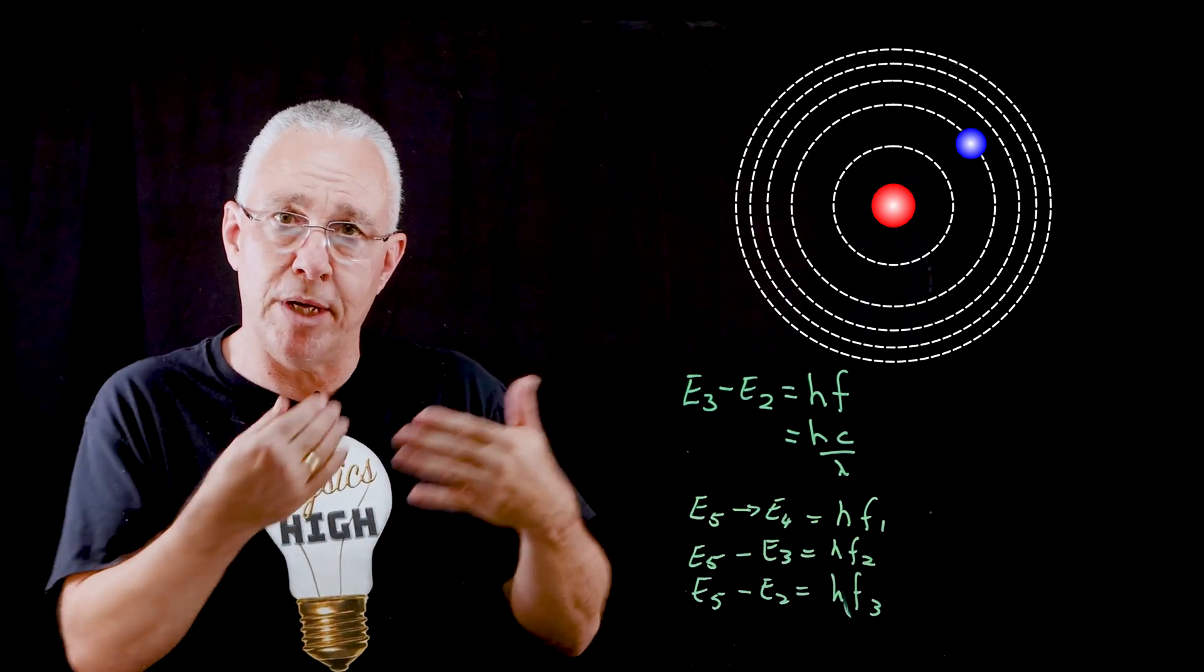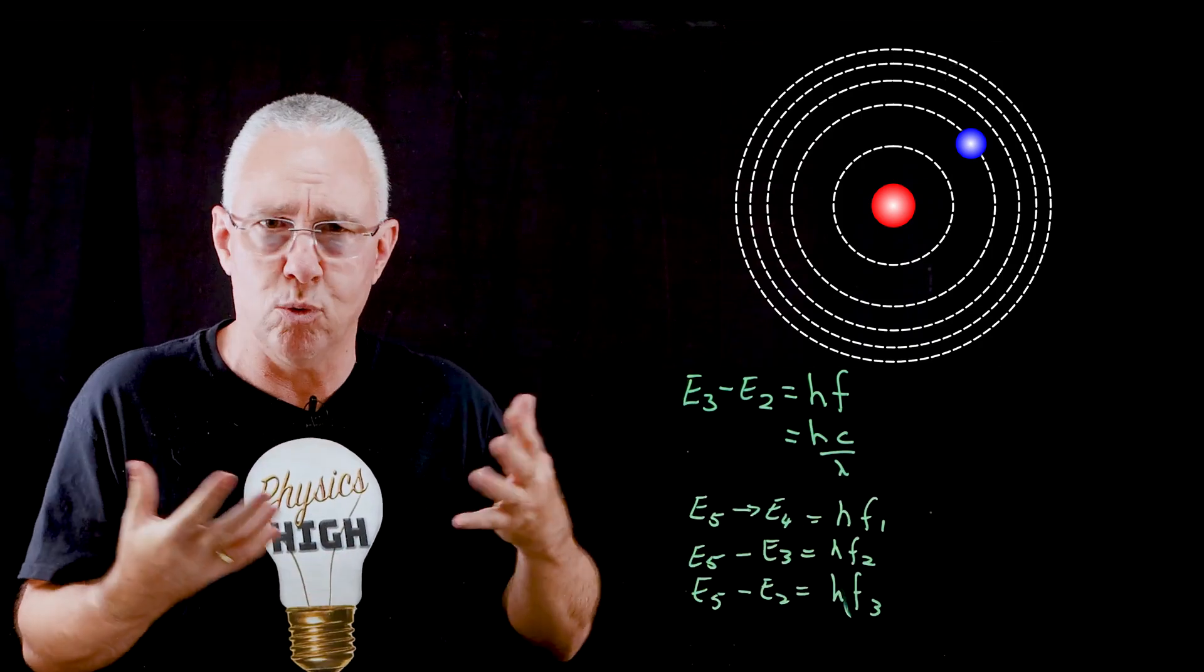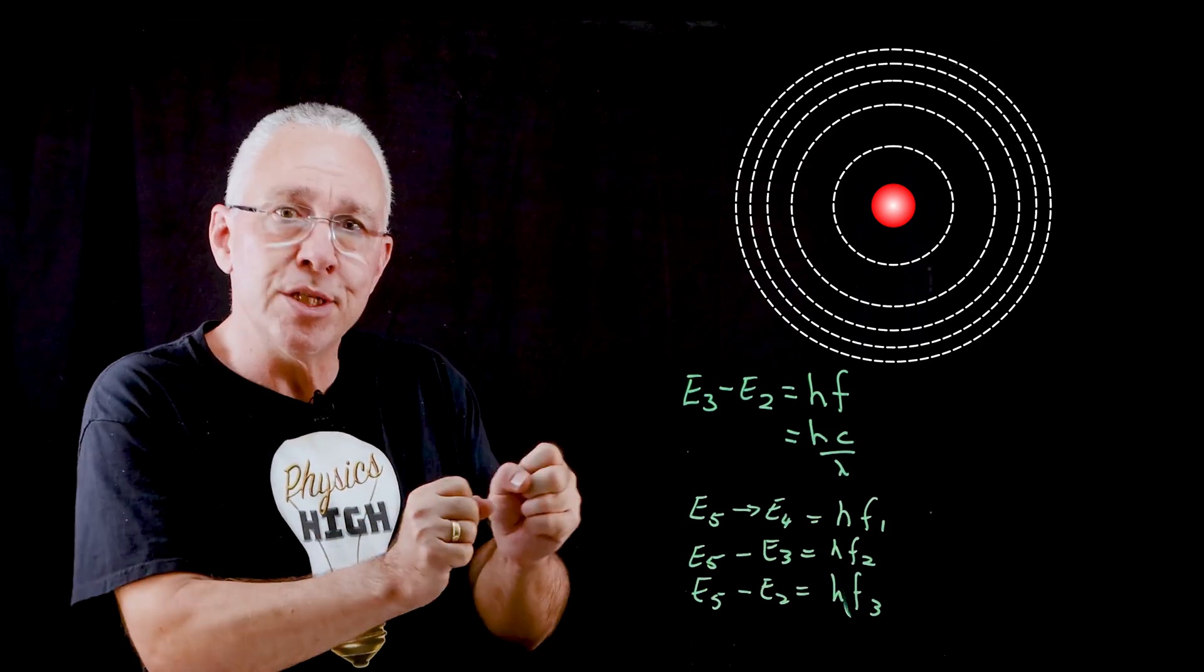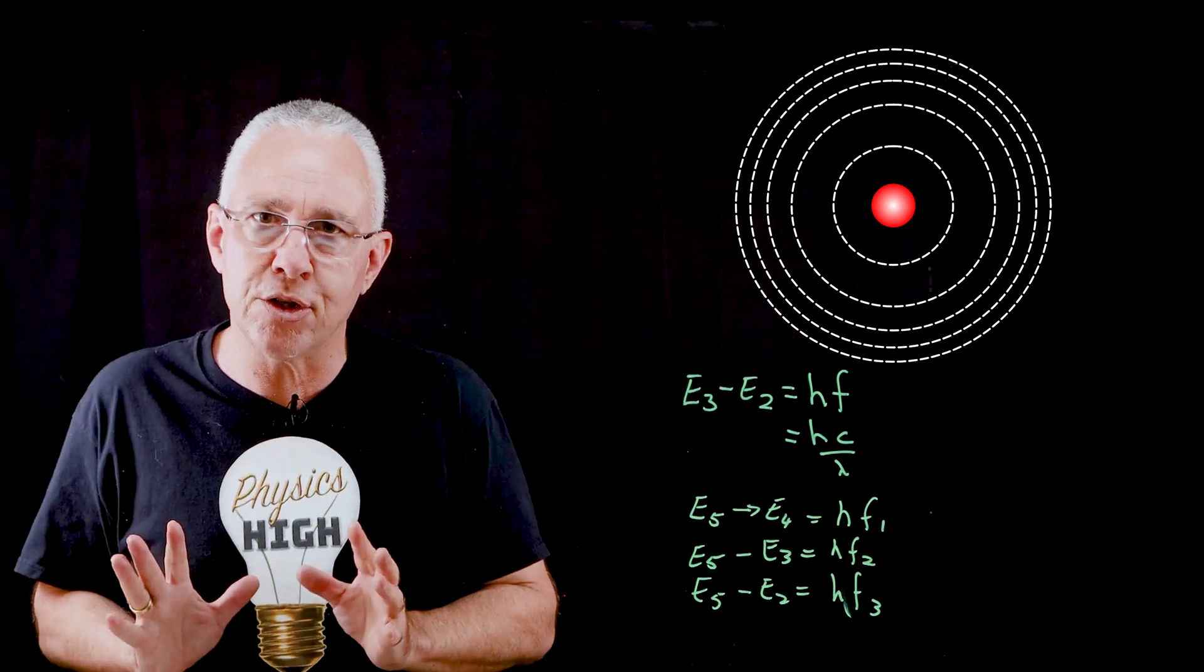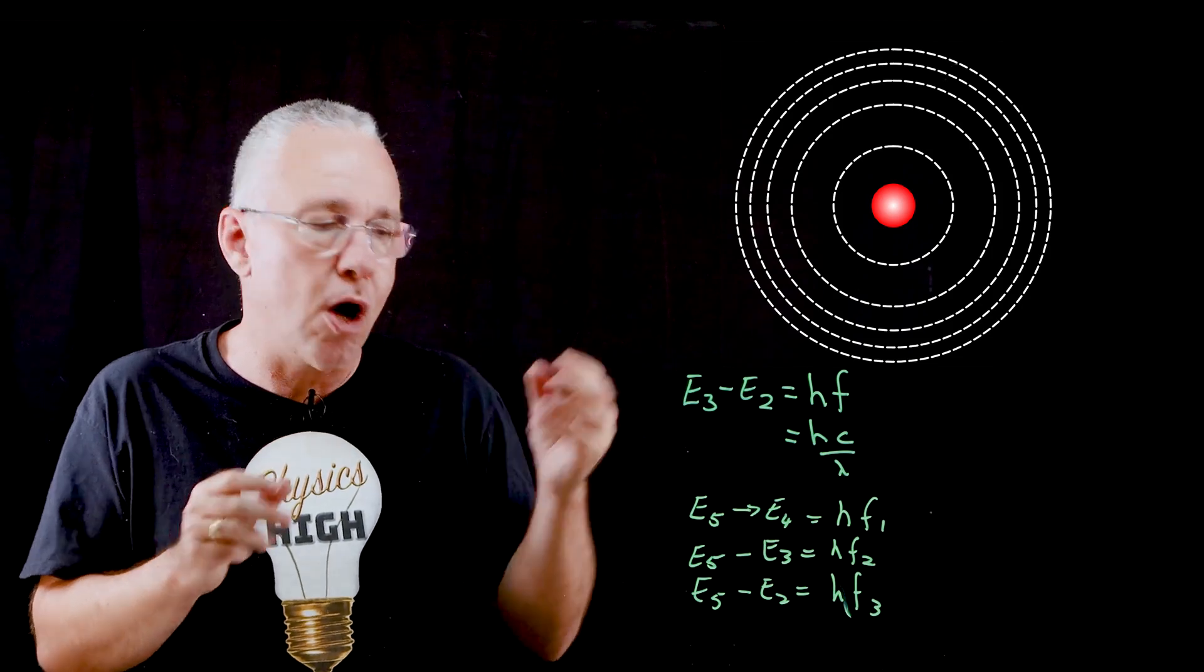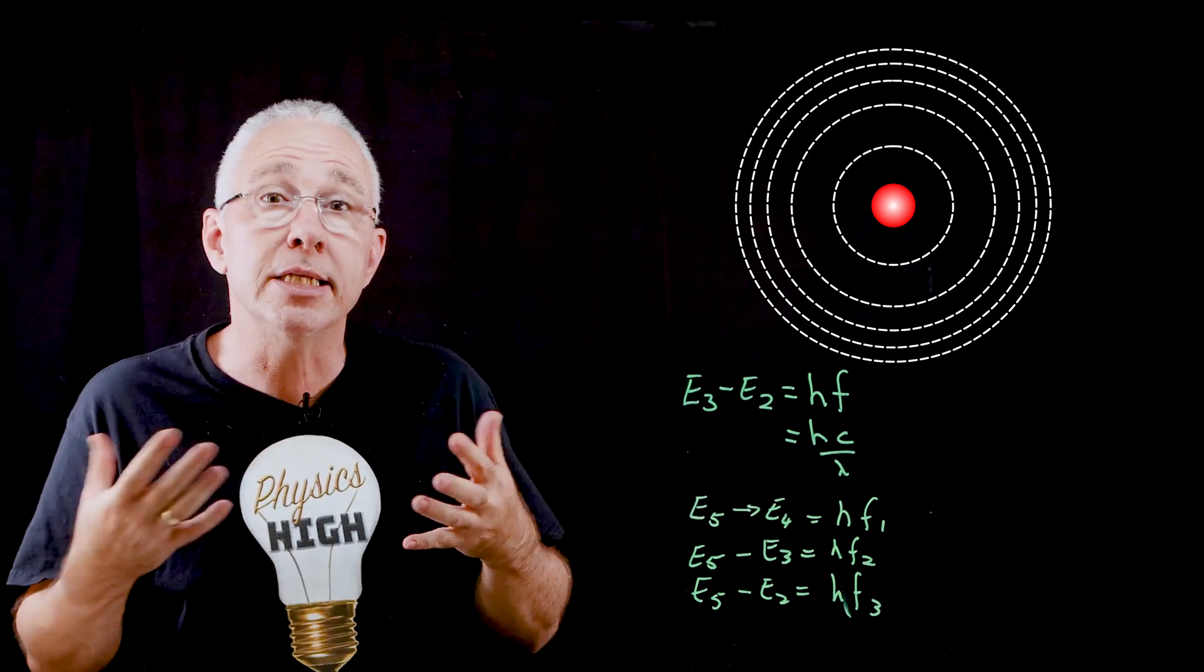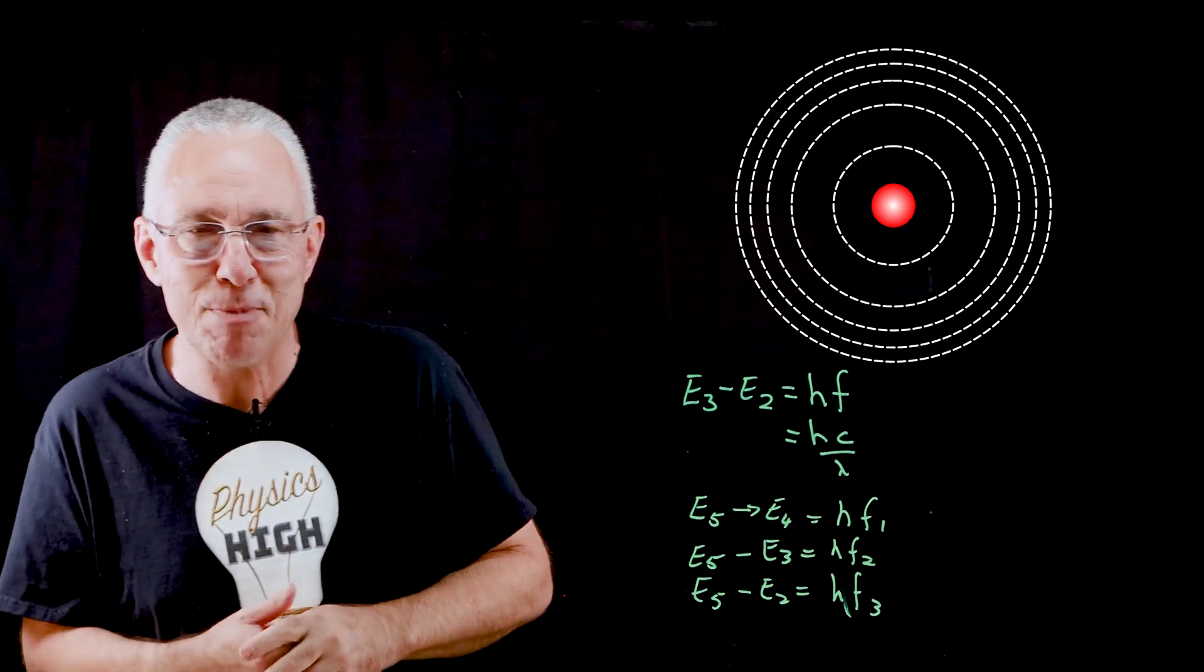Therefore, if the electron jumps from energy level five, it can release three different frequencies or wavelengths as a result. And because these are fired off in random directions, what you end up seeing is the occasional photon of those particular frequencies hitting your eyes. If you look from the side, this explains our emission spectrum.